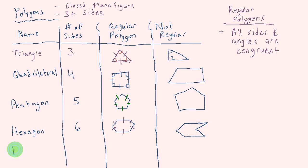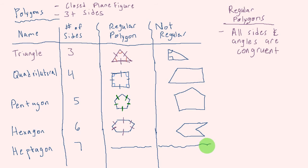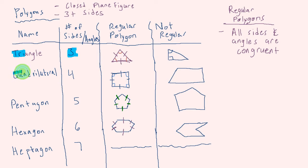Our next shape has seven sides — it's called a heptagon. When naming polygons, how do they get their names? They're named based off of the number of sides, which is also the number of angles — there's the same amount of angles as sides in each polygon. So: tri means three, quad means four, penta means five, and hexa means six.